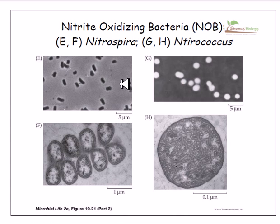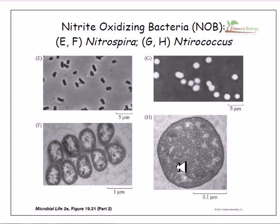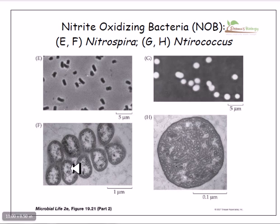On the other hand, the nitrite-oxidizing bacteria (NOB) convert nitrite into nitrate. Examples shown here include Nitrospira, which is arranged in a spiral structure, and Nitrococcus, which is round in shape. Nitrospira also appears as short rod-like structures.